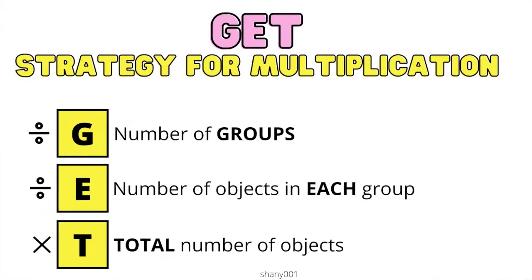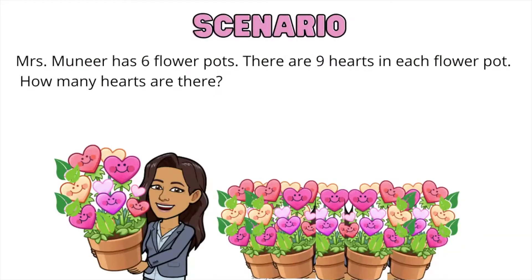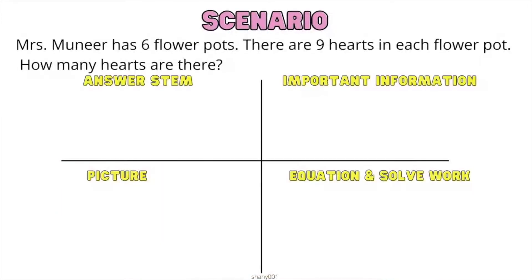Let's go ahead and look at some examples. Mrs. Muneer has six flower pots. There are nine hearts in each flower pot. How many hearts are there? Let's go ahead and make our problem-solving model. In our problem-solving model, we have the answer stem, the important information, a picture model, and equation and solve work.